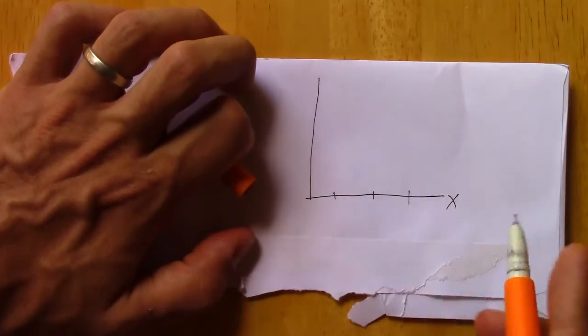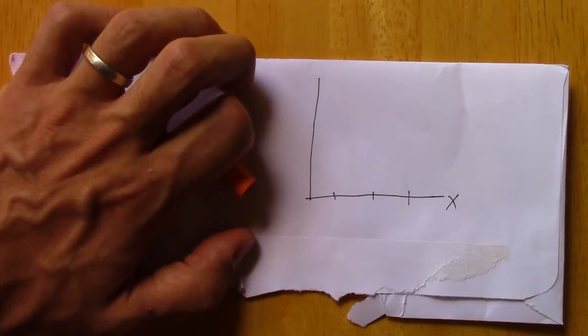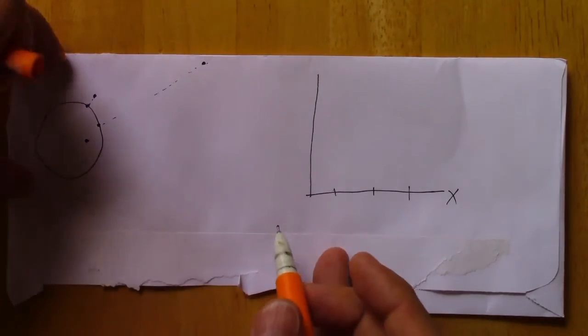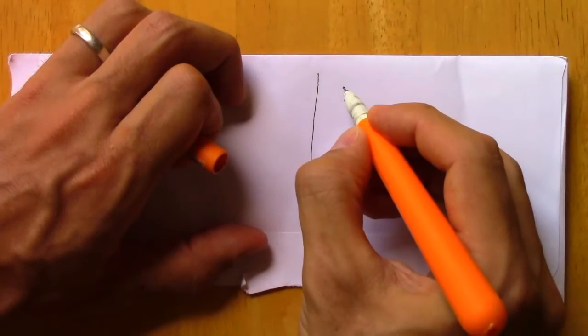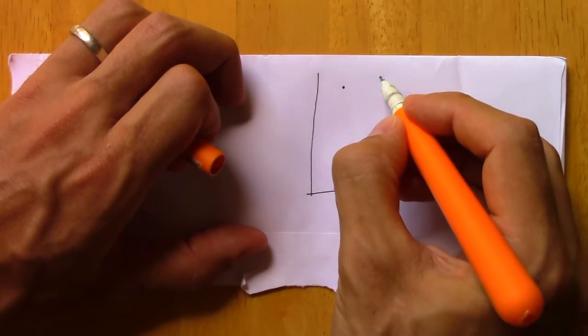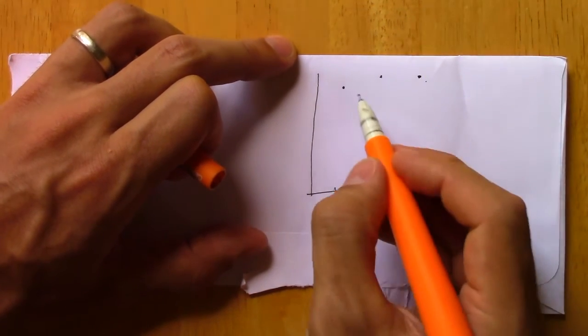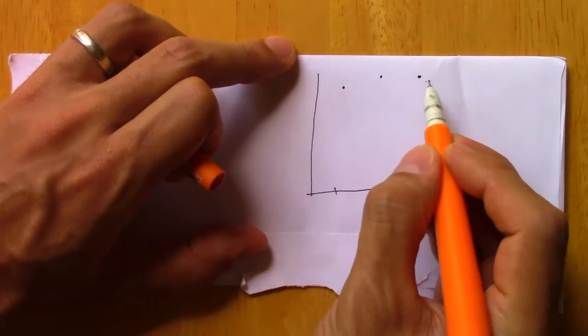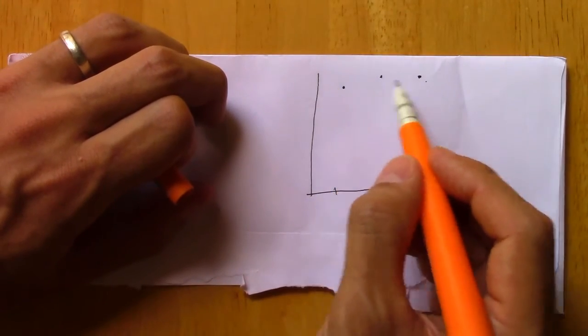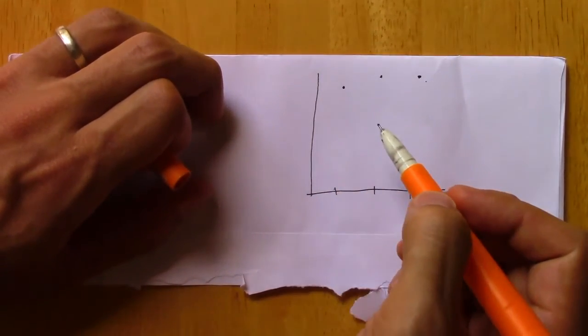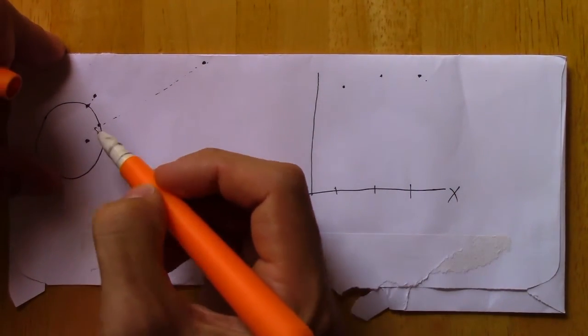So more interestingly is when the CEF is not linear. In particular, we can imagine maybe the points are sort of like this where they're not exactly linear but very close to linear. And when you take a linear projection, we'll get something very close to the true CEF because the true CEF is already very close to being linear.